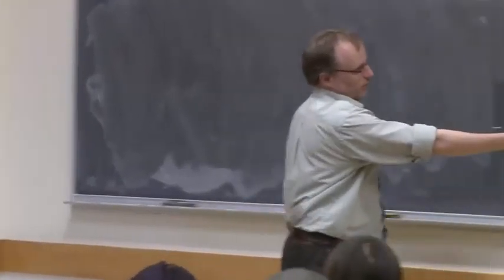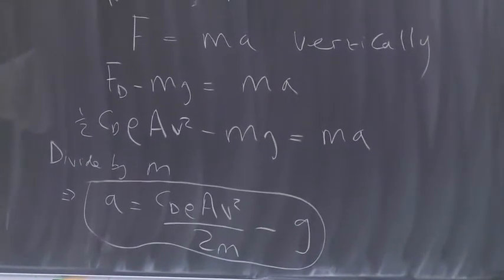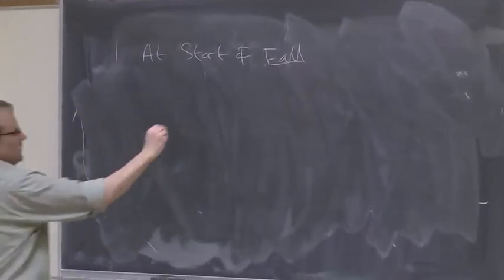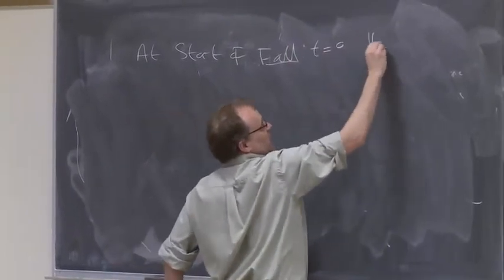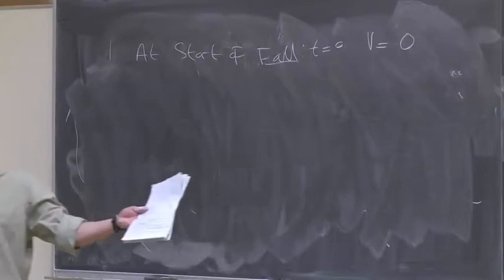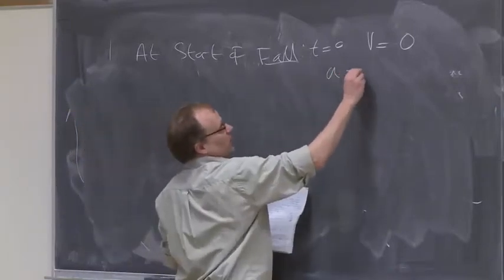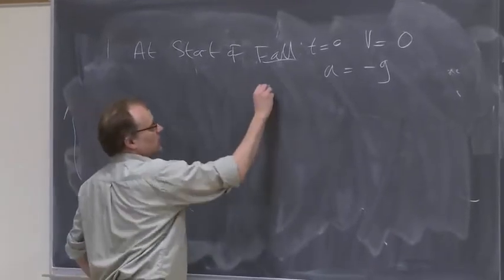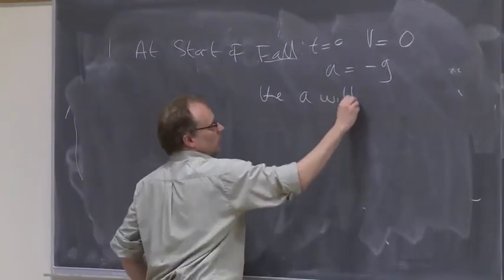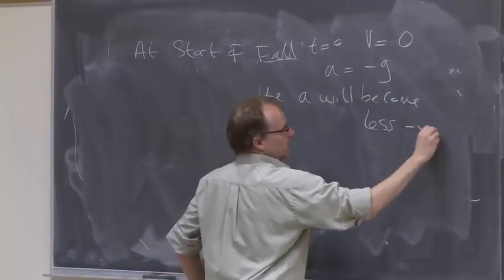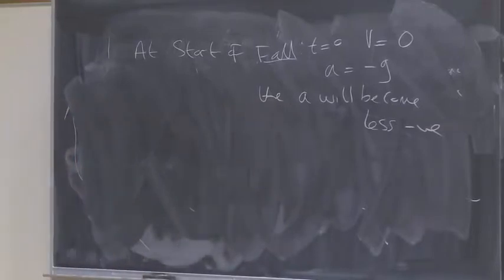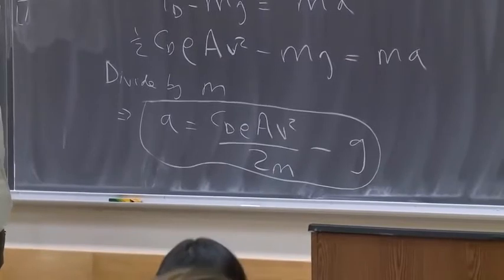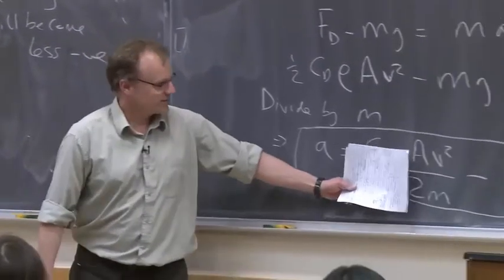Here we have the acceleration of the falling object with these coefficients. At the start of the fall, which would be t equals 0, we would also have v equals 0, or velocity is 0. You just jumped out a plane. So at the start, you have v equals 0, which means you have a equals minus g. So you will accelerate fastest at the beginning. And then a will become less negative. It's going to approach 0.